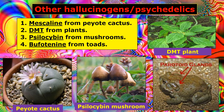Some other sources of hallucinogens are mescaline from the peyote cactus, DMT which comes from plants usually grown in South America, psilocybin from mushrooms sometimes called shrooms, and bufotenine that comes from the glands of certain toads.